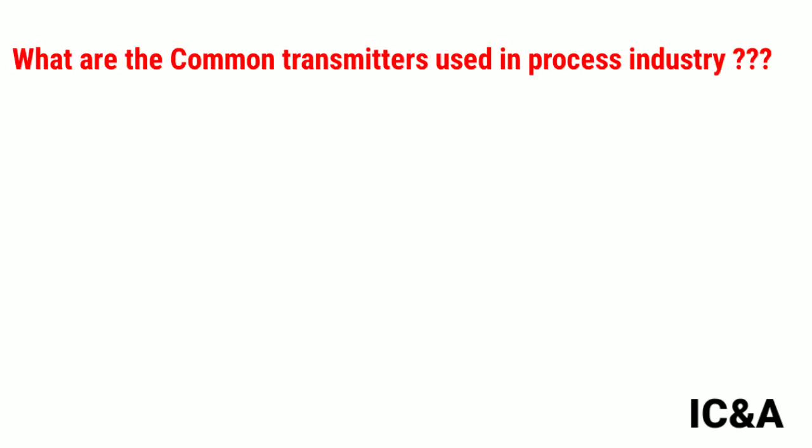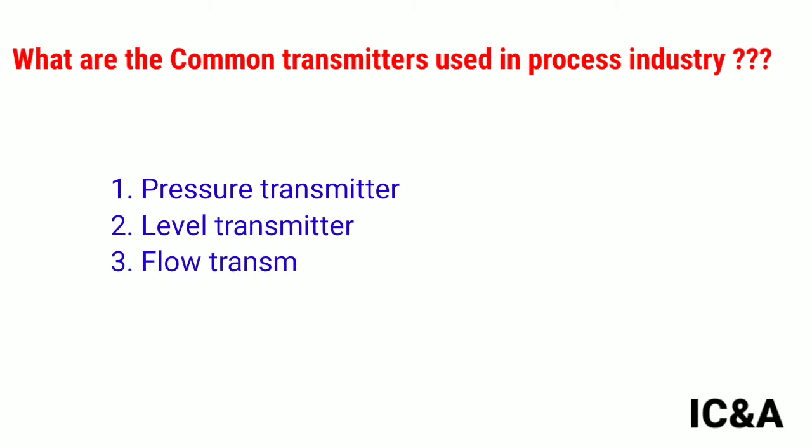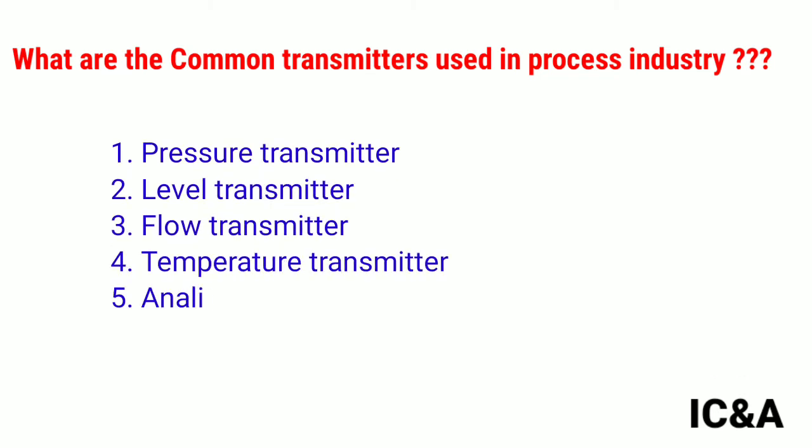What are the commonly used transmitters in process industry? Pressure transmitters, level transmitters, flow transmitters, temperature transmitters, and analytic transmitters such as O2, CO, H2S, pH, etc.